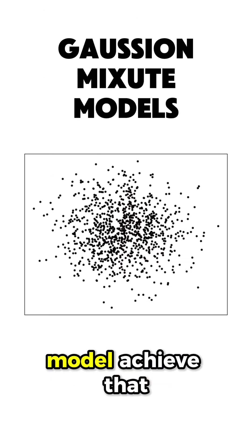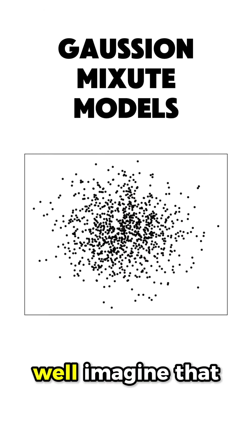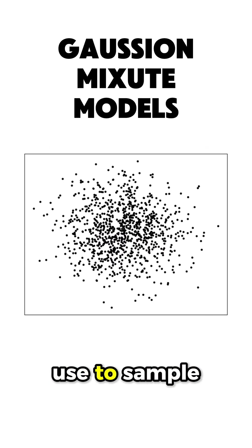But how does the Gaussian mixture model achieve that? Well, imagine that you have the following data and you want to create a distribution you want to use to sample new data.